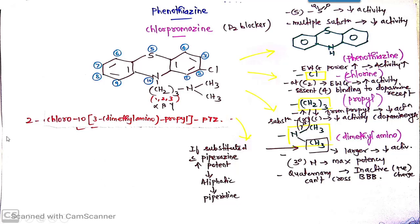Coming towards the IUPAC nomenclature. At second position chlorine is there. According to alphabetical order C comes first. So at second position of phenothiazine, it is 2-chloro phenothiazine. Everything outside the bracket.